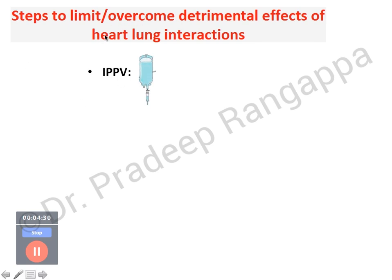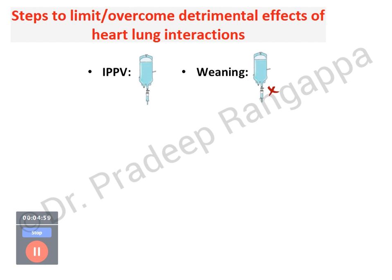Now we look at steps to limit or overcome the detrimental effects of heart-lung interactions. During controlled mechanical ventilation, fluid resuscitation has a favorable effect. However, when weaning the patient from the ventilator — when the patient is spontaneously breathing — fluid resuscitation has a detrimental bearing. So during the weaning phase, fluid resuscitation should be avoided, but when ventilation has been initiated, fluid resuscitation has a favorable effect.